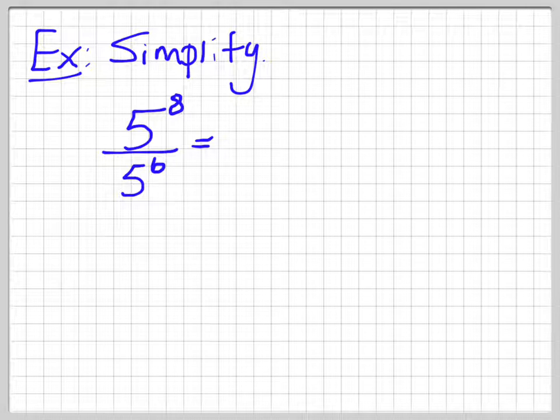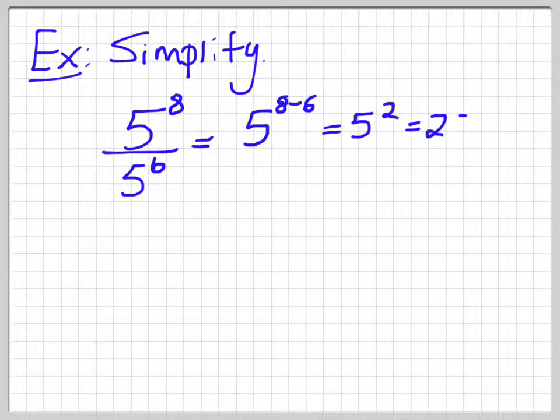So what we do in that case is we would subtract the exponent. So we would write it as just 5 to the 8 subtract 6. So we write it as one base and then we subtract our exponent. So 8 subtract 6 is 5 to the 2 and then 5 to the 2 is 25.